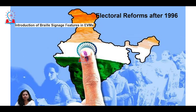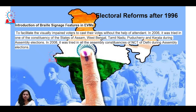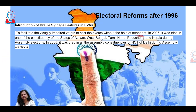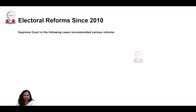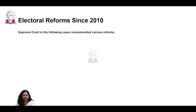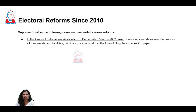Very sensitive features have been introduced towards the disabled community by incorporating braille features in EVMs, ensuring visually impaired voters can also cast their vote with the help of an attendant. This is making democracy more inclusive and participatory. From the 2009 election onwards, braille features were introduced to all EVMs.